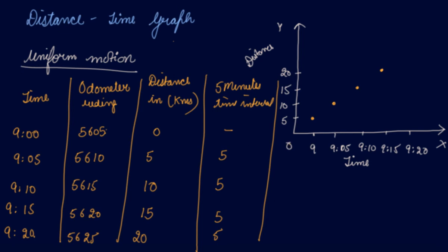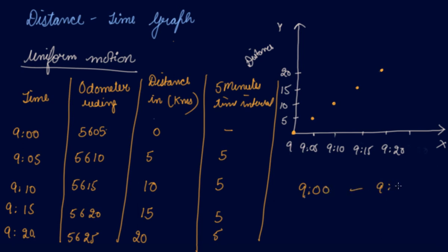Starting from 9am, then 9:05, then 9:10. At 9am there was no distance covered since you just started your car. At 9:05 you covered a distance of 5 kilometers. At 9:10 you covered another 5 kilometers, and again 5 kilometers at 9:15 and 9:20. So in total from 9am to 9:20am you covered 20 kilometers. The straight line through points A, B, C, D shows uniform motion — your body is moving at a uniform rate.